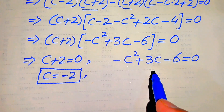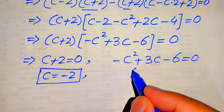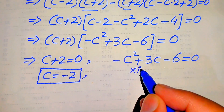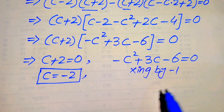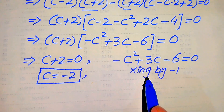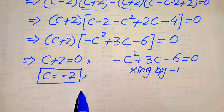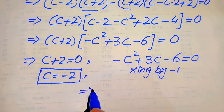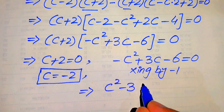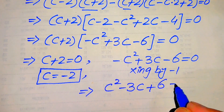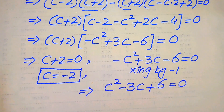To solve the quadratic equation, we first write it in standard form by multiplying both sides by minus 1. This gives c squared minus 3c plus 6 equals 0.